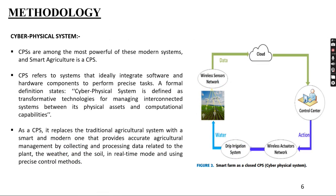What is the methodology? Cyber-physical systems (CPS) are among the most powerful modern systems and smart agriculture is a CPS. CPS refers to systems that integrate software and hardware components to perform precise tasks. A formal definition states that a cyber-physical system is defined as transformative technologies for managing interconnected systems between its physical assets and computational capabilities. As a CPS, it replaces the traditional agricultural system with a smart and modern one that provides accurate agricultural management by collecting and processing data related to plant, weather, and soil in real-time using precise control methods.